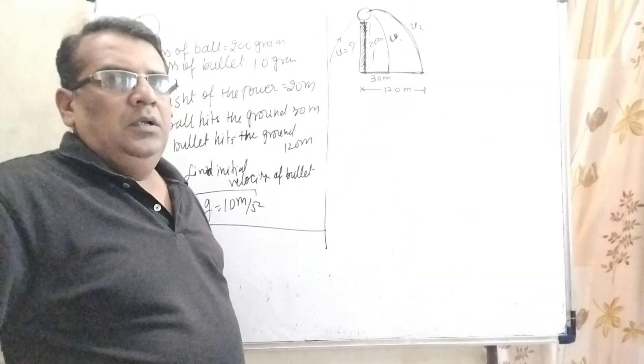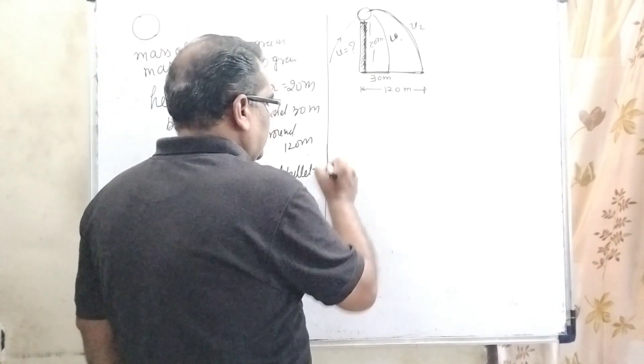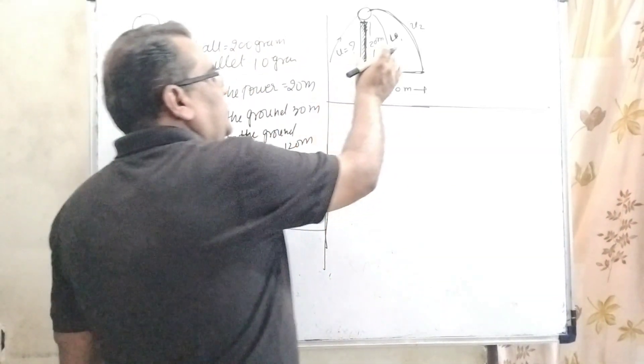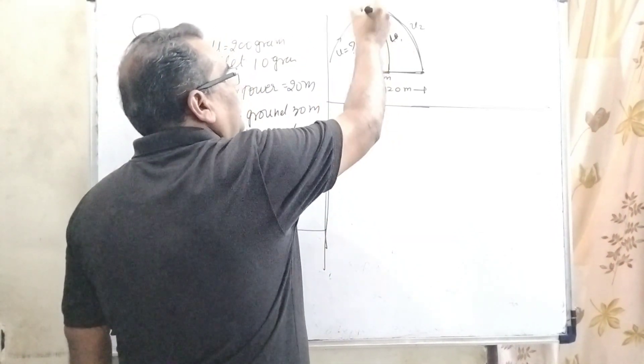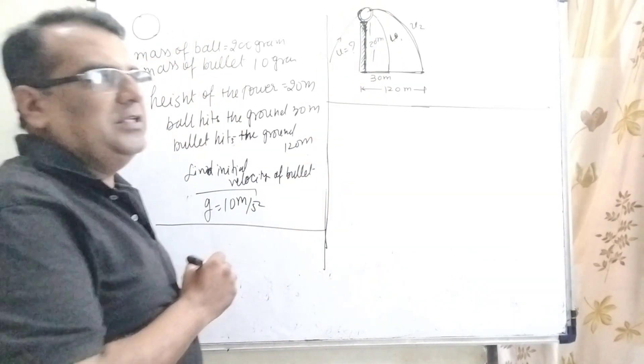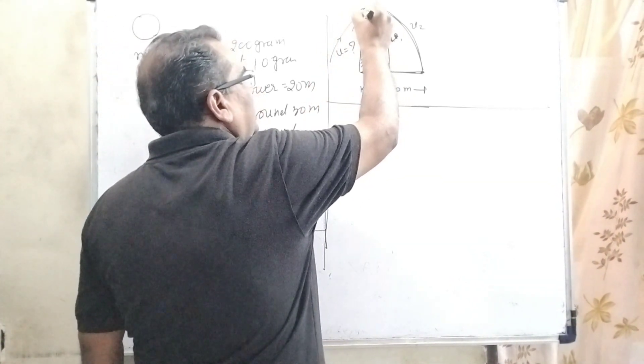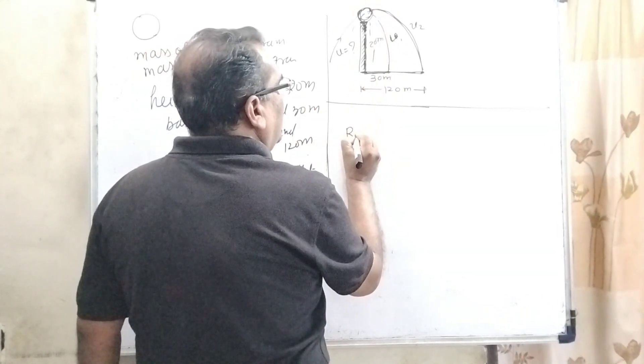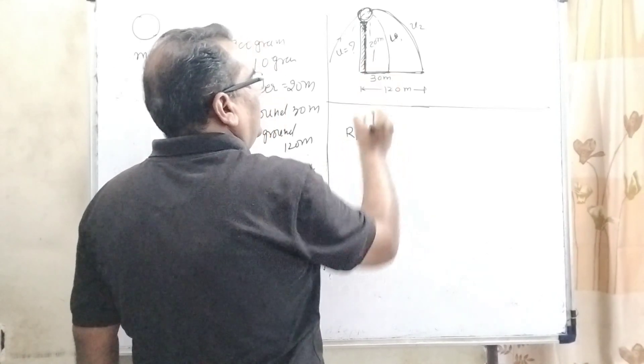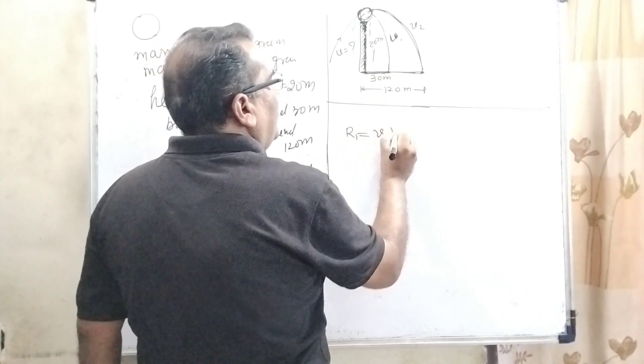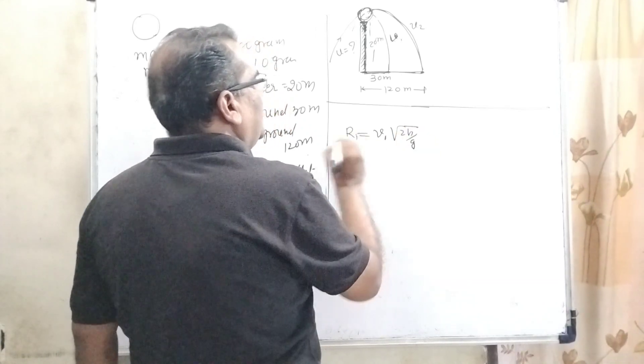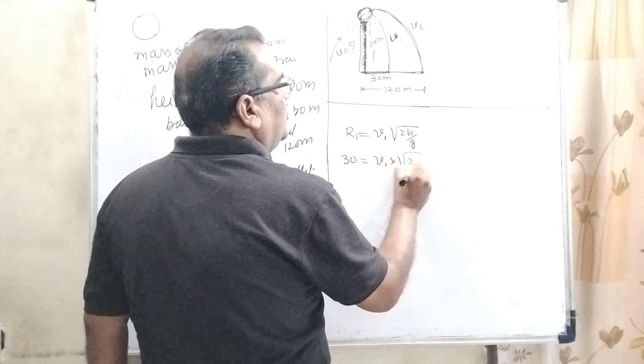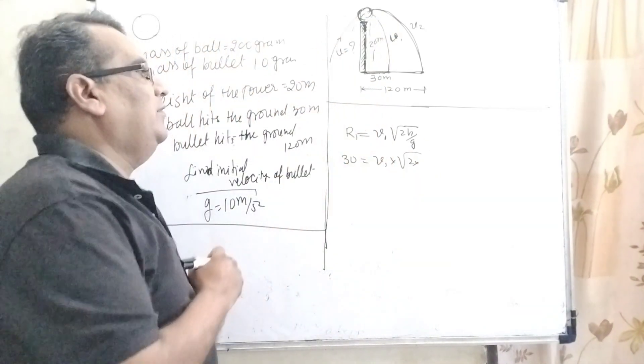The ball is falling down and lands 30 meter away from this vertical post. And this bullet falls at 120 meter from this vertical post. I have redrawn this diagram because it is taking more space. And for our convenience, let us first find out V1. V1 means velocity of this ball after hitting this bullet at the center. The range is given, that is 30. So R1 is equal to V1 times the time of flight, which is square root of 2H by G.